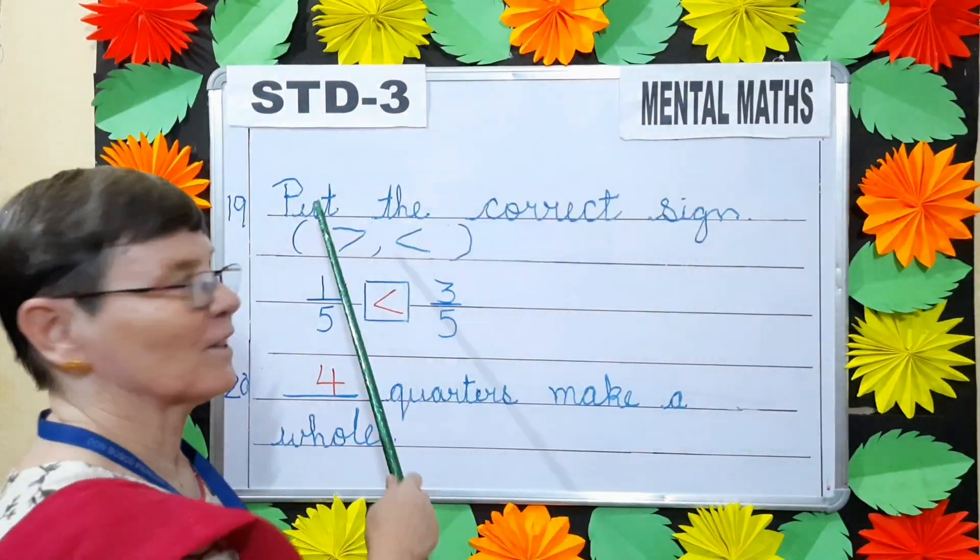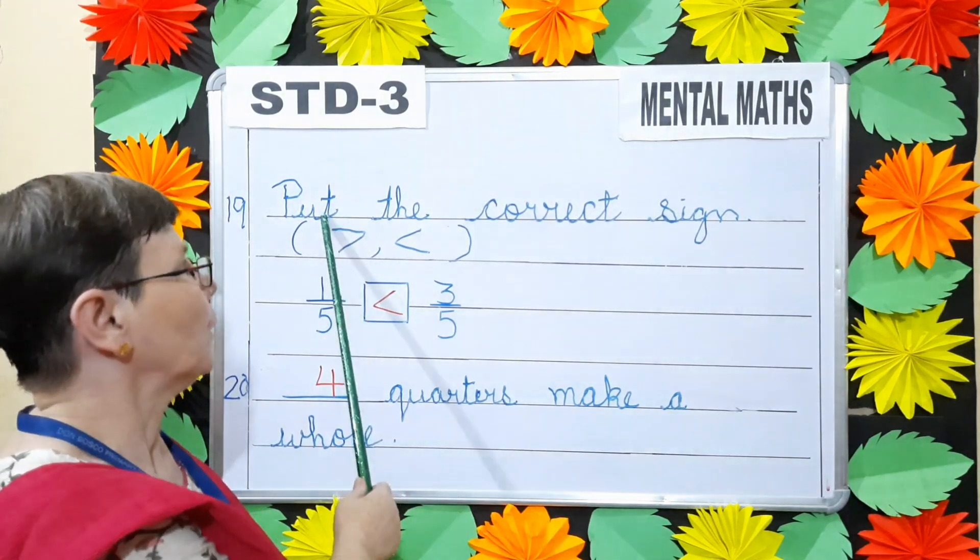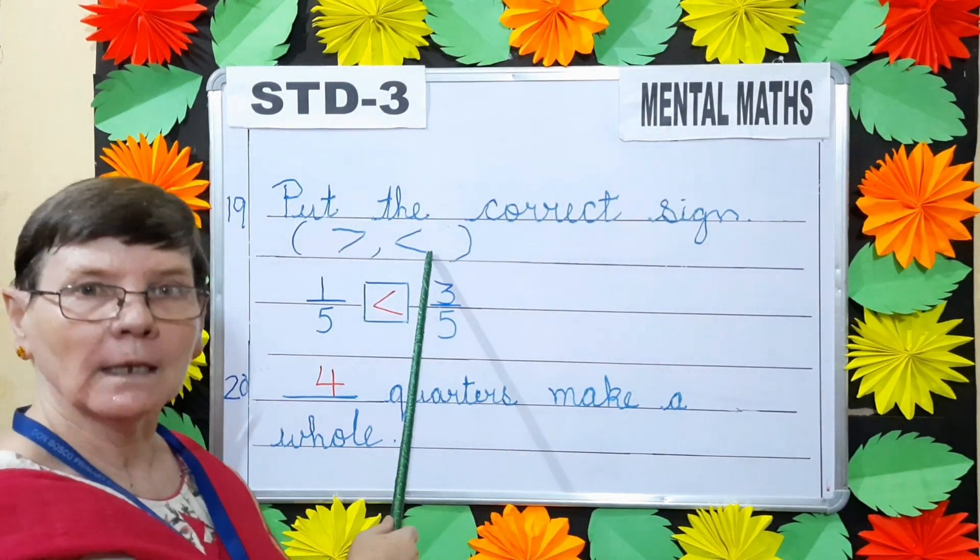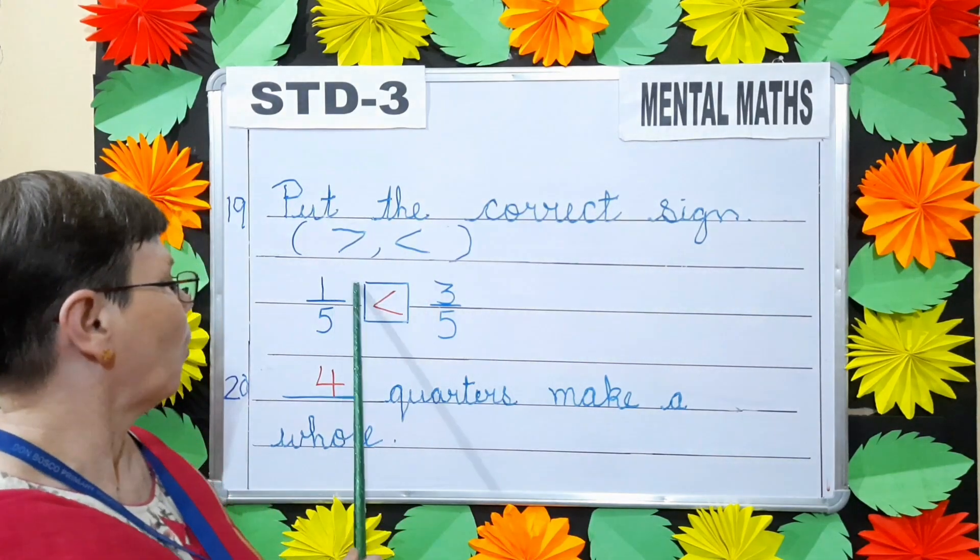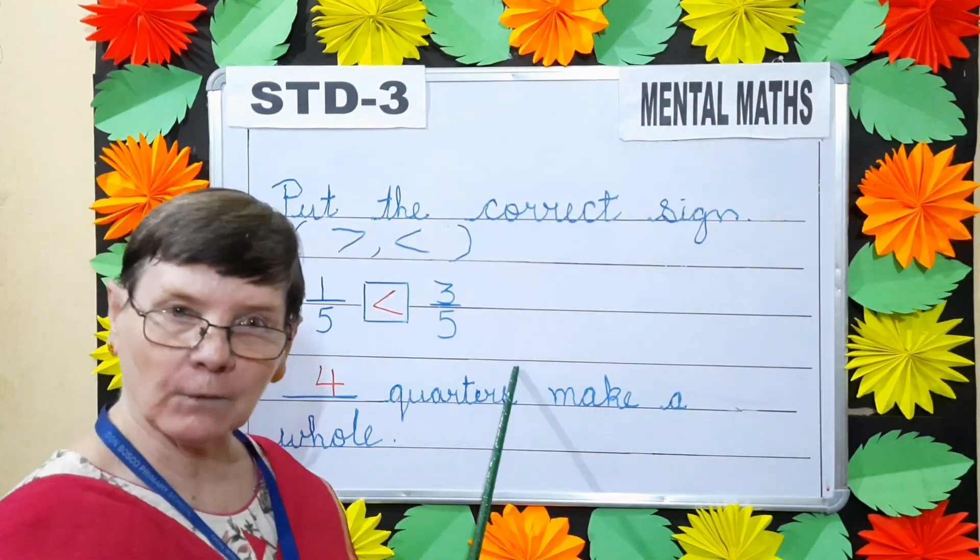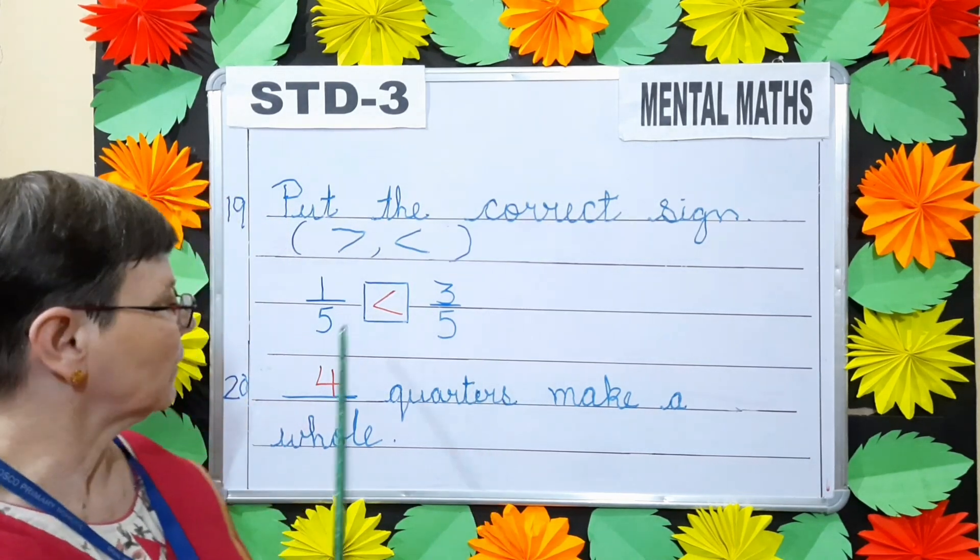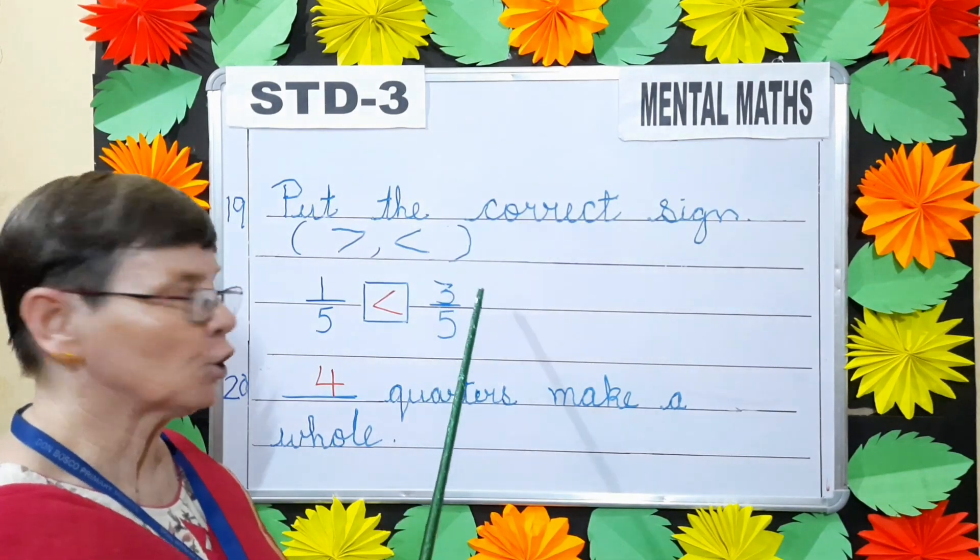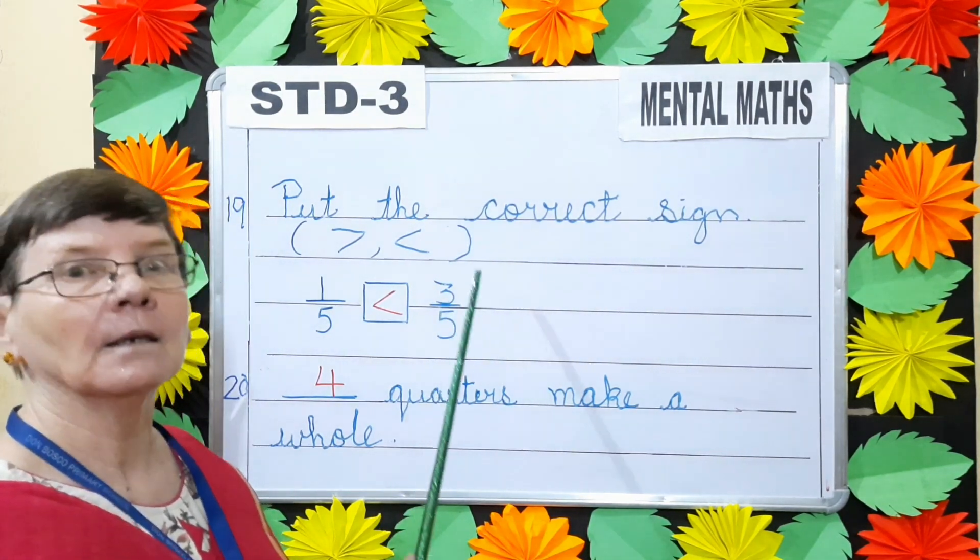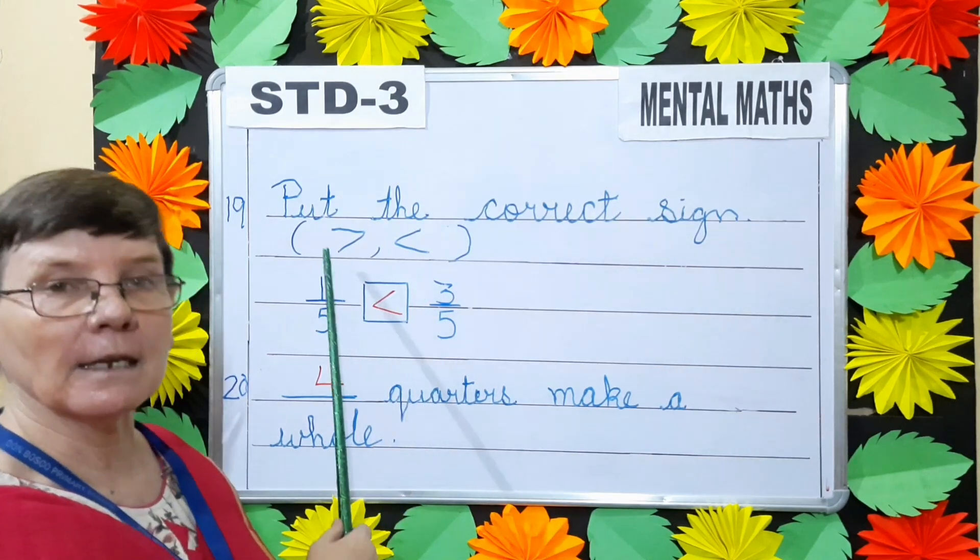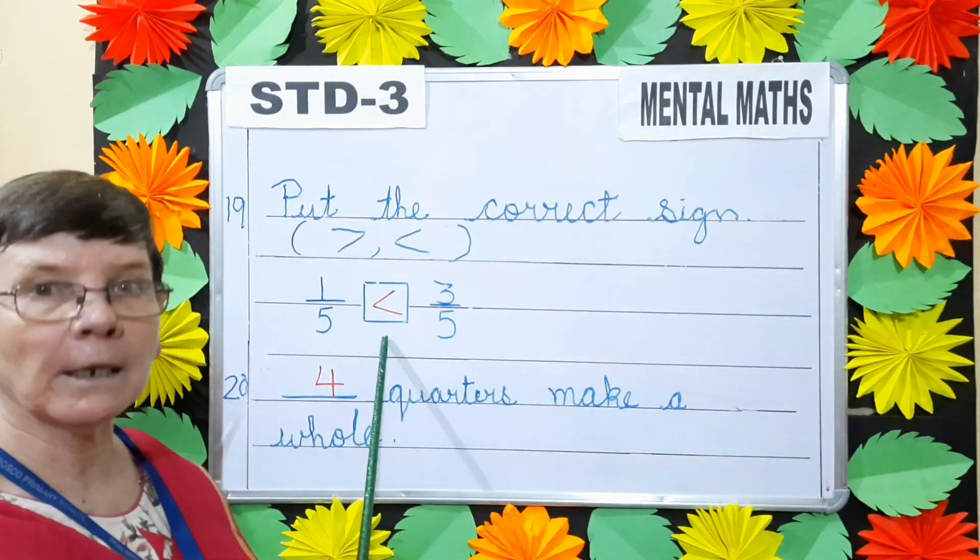Question number 19. Put the correct sign, greater or lesser. 1 by 5 dash 3 by 5. Now when you add the same denominator, you look at the numerator. Which numerator is bigger? 3 is bigger. So 3 by 5 is greater than 1 by 5.